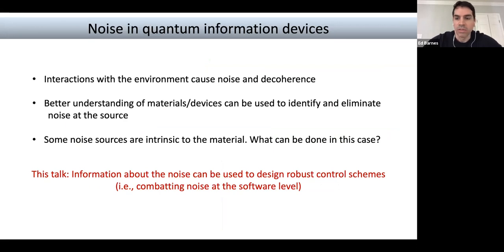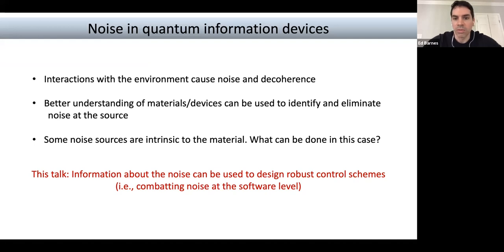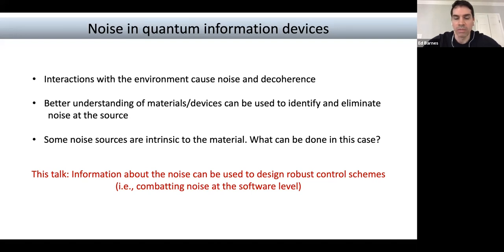Interactions with the environment cause noise and decoherence. A better understanding of materials and devices is a huge part of mitigating this problem, and there's been tremendous progress over the last decade or two in isolating and reducing these noises inside the device. But ultimately we can't completely isolate the qubits — we're interested in doing operations on them, which means there's always going to be some channel that brings in noise. So we need to figure out how to improve the control we apply, and whether we can combat noise at the software level when we send in electromagnetic pulses.